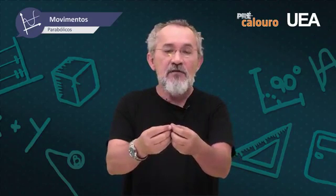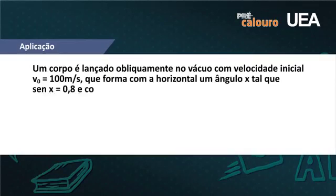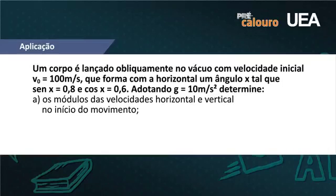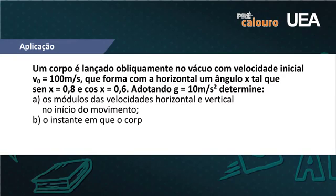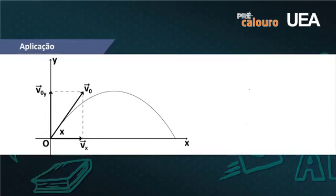Vamos enfrentar uma situação-problema: um corpo é lançado obliquamente no vácuo com velocidade inicial V₀ = 100 m/s. Essa velocidade forma com a horizontal um ângulo x tal que sen(x) = 0,8 e cos(x) = 0,6. Adotando g = 10 m/s², determine: letra A — os módulos das velocidades horizontal e vertical no início do movimento; letra B — o instante em que o corpo atinge o ponto mais alto; letra C — a altura máxima; letra D — o alcance do movimento.